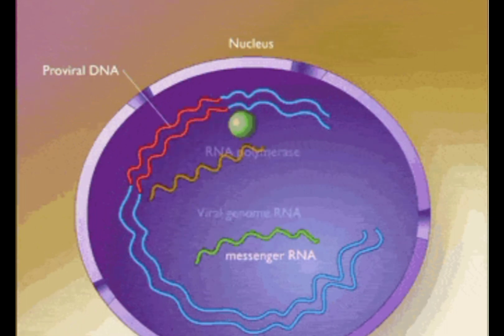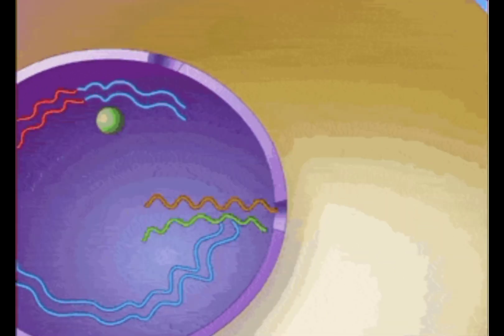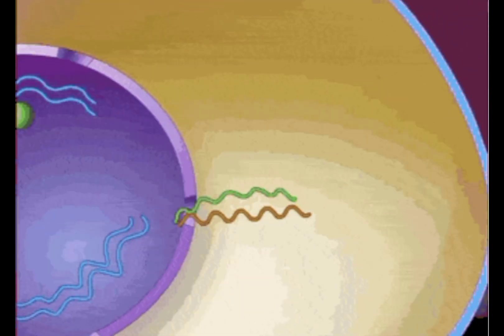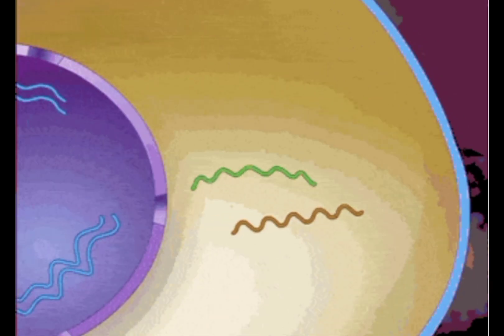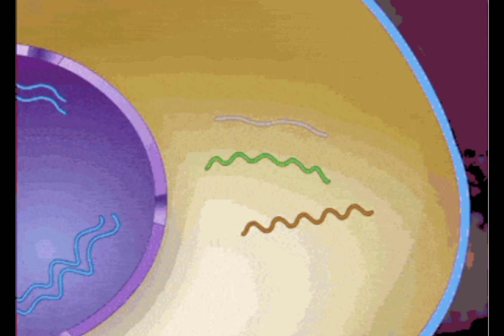The nucleus contains numerous fine threads in the form of a network throughout nucleoplasm called chromatin network or nuclear reticulum. It can be seen only in non-dividing cells. This network is made up of chromatin material, that is DNA and histone protein.